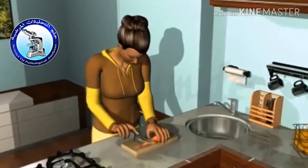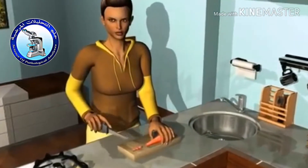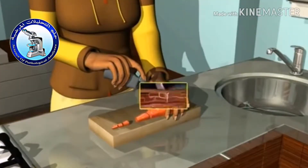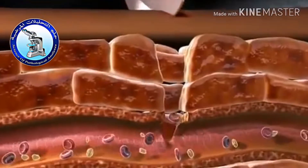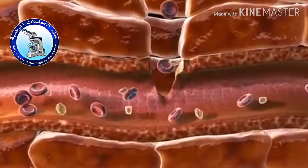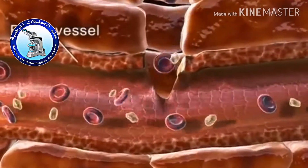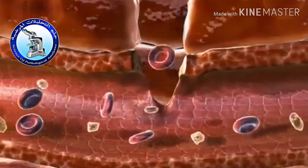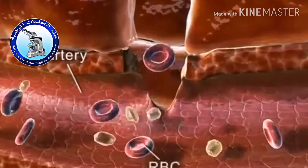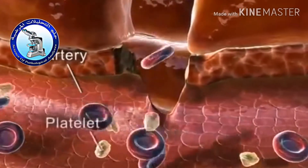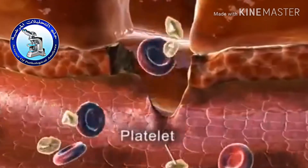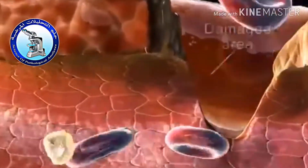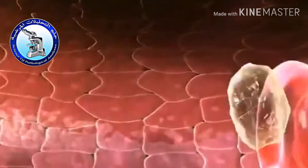If we are careless while using a knife, we might cut our finger. A zoomed-in view of the damaged area shows that the knife ruptures a blood vessel, causing immense loss of blood. Inside the artery, we can observe the RBCs and platelets which escape out through the damaged area. The platelets play a very important role in the initiation of blood clotting.